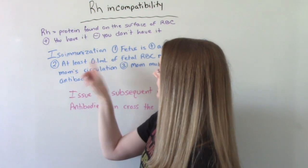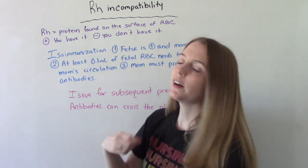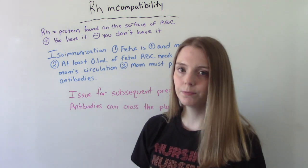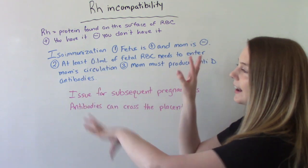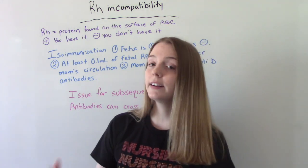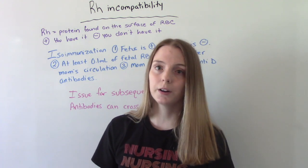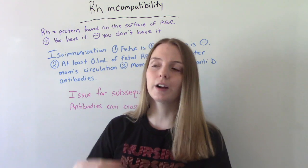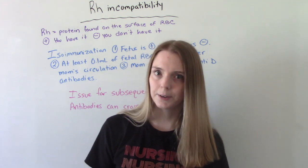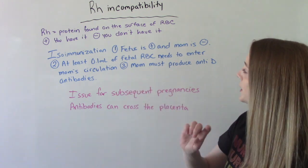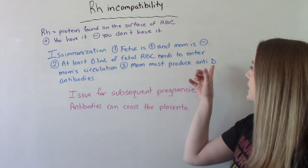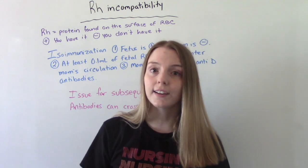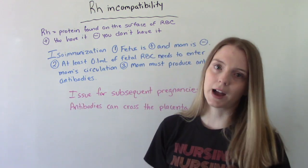There needs to be at least 0.1 ml of fetal red blood cells that enters mom's circulation. That can happen at any time during pregnancy, labor, delivery, or postpartum, but 9 times out of 10 it will happen during labor after the placenta has separated. Then mom must produce anti-D antibodies — mom's immune system has to be strong enough to make these antibodies.